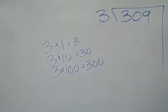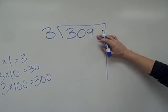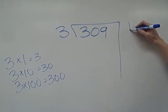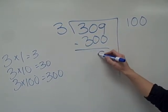And we're going to make a decision. 3 goes into 309 how many times, getting close without going over? We're going to use 100. 100 times 3 is 300, and when we subtract we get 9.